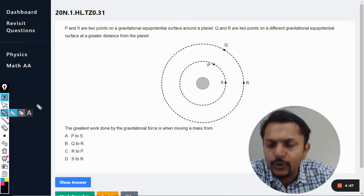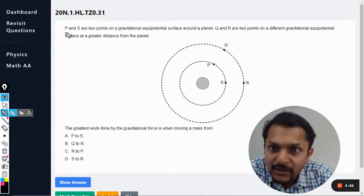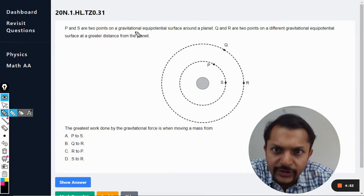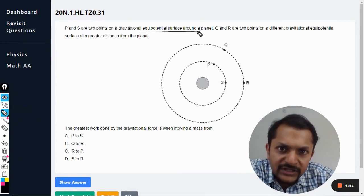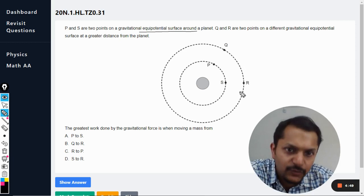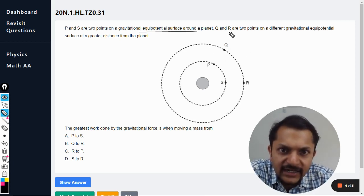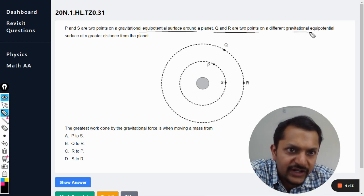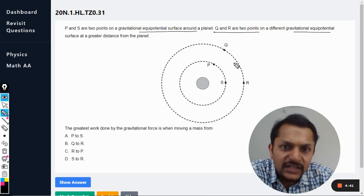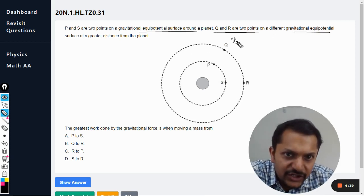Okay dear students, let us see another question. P and S are two points on a gravitational equipotential surface. It is already given this is equipotential, so the potential is the same for P and S. And Q and R are two points on a different gravitational equipotential surface. This is also equipotential, so the potential at Q is equal to potential at R, and potential at P is equal to potential at S.